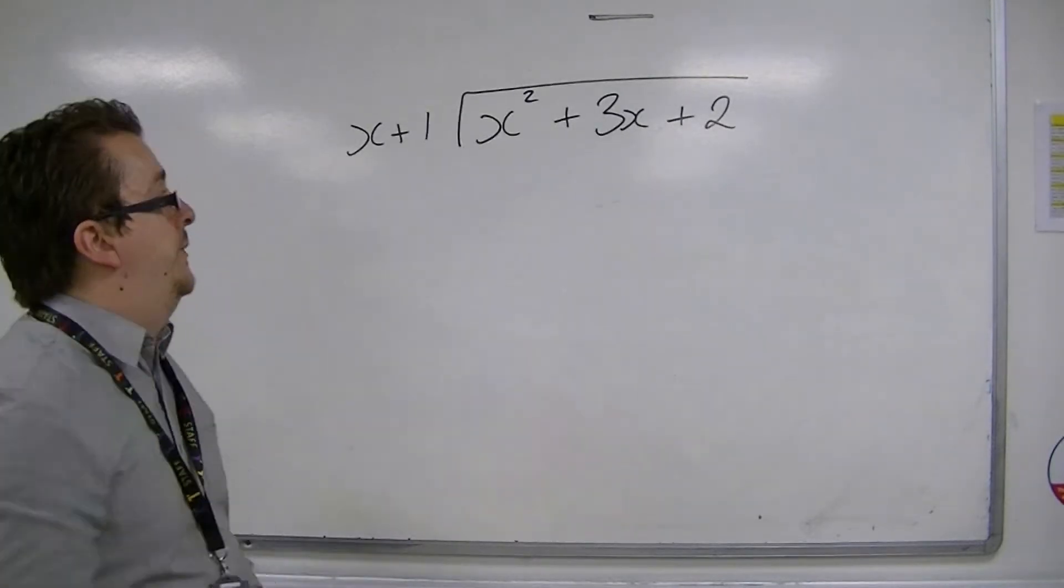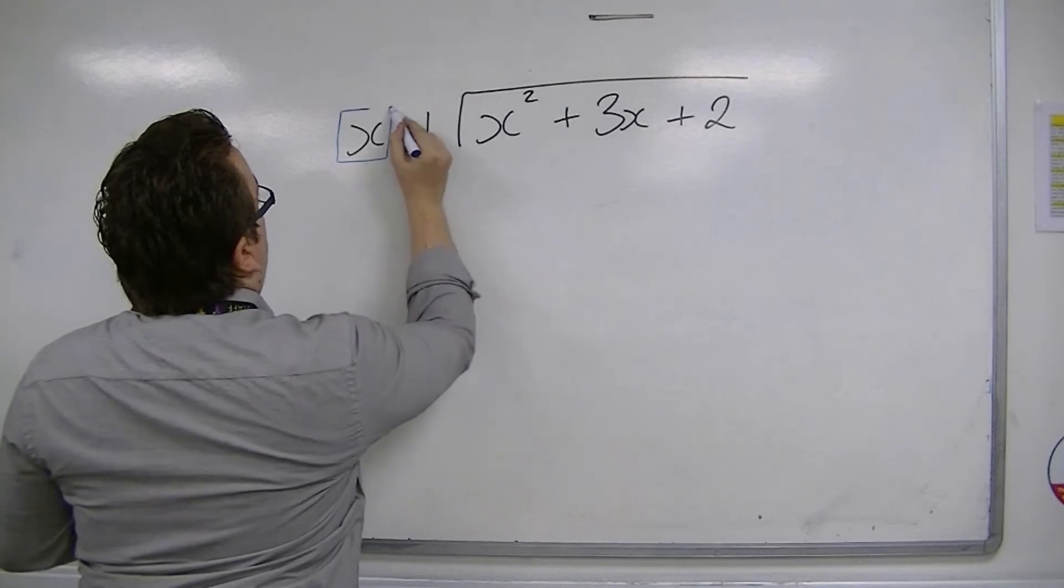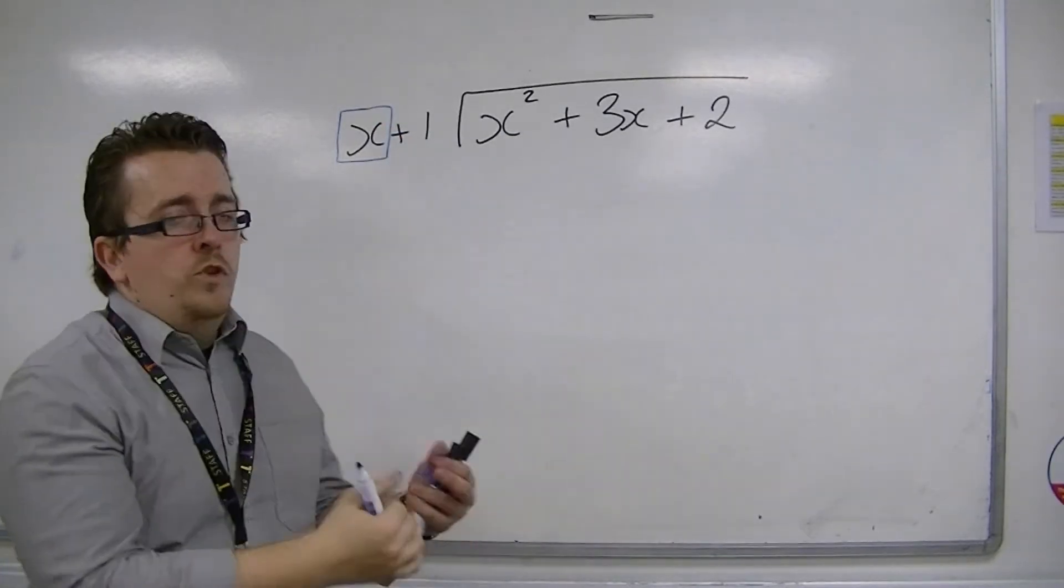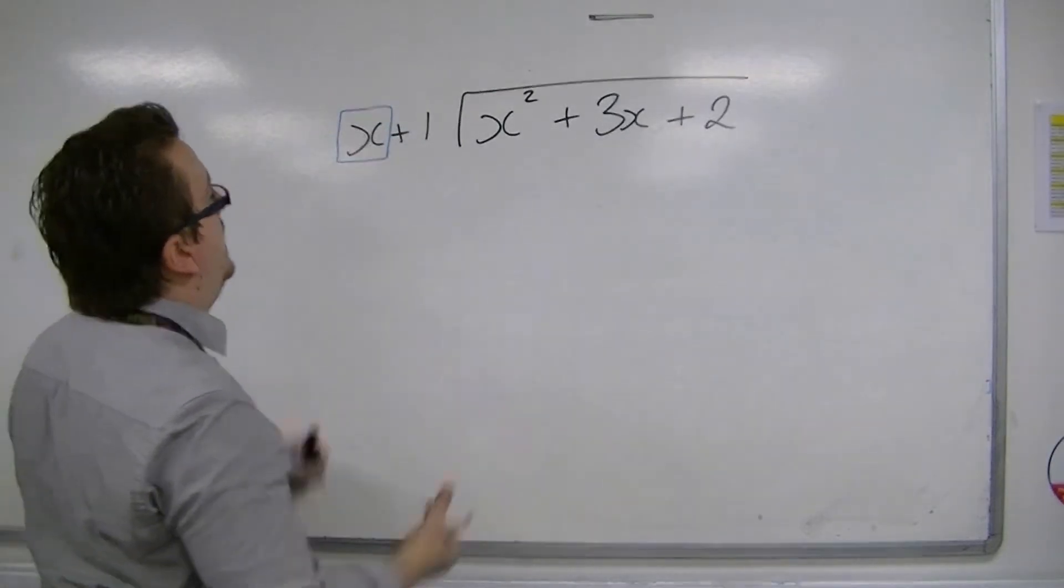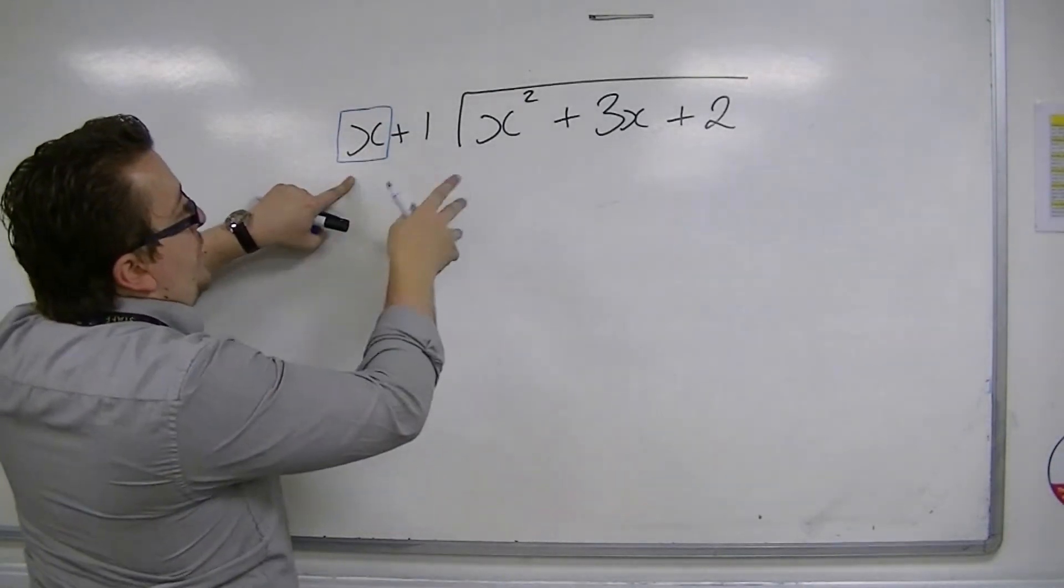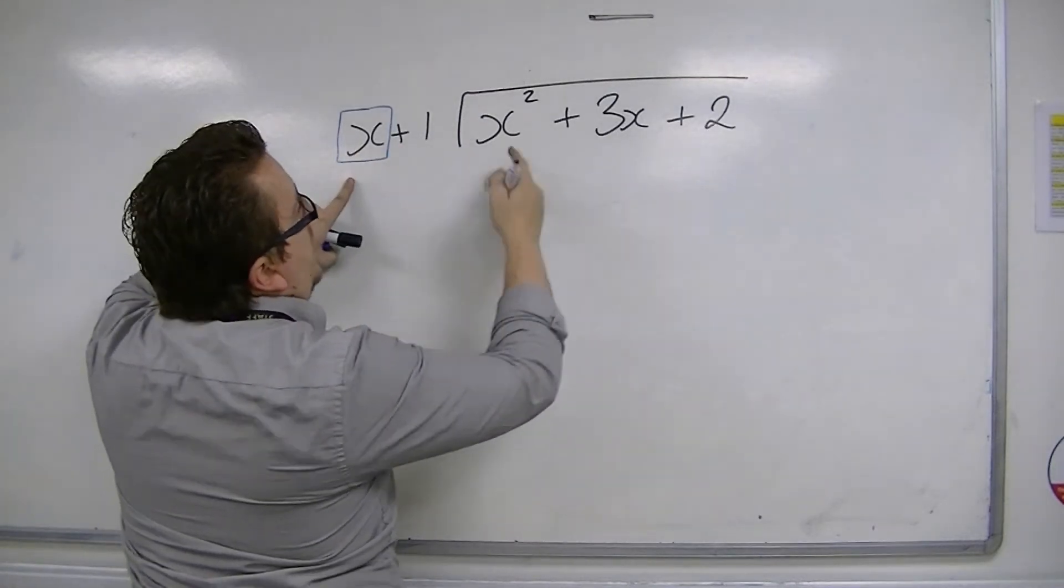So this is how it works. All you're ever dealing with is really this x. The one, you can't ignore it, we are going to use it at points, obviously. But when we're actually doing a division, we're actually looking at this x. So we look at how many x's go into x squared.